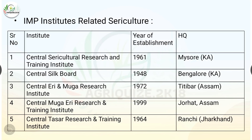Important institutes related to sericulture: Central Sericultural Research and Training Institute established in 1961, headquarters in Mysore, Karnataka. Central Silk Board established in 1948, headquarters in Bangalore, Karnataka. Central Eri and Muga Research Institute established in 1972, headquarters at Titabar, Assam. Central Muga Eri Research and Training Institute established in 1999, headquarters at Jorhat, Assam. Central Tasar Research and Training Institute established in 1964, headquarters in Ranchi, Jharkhand.